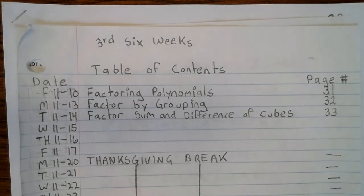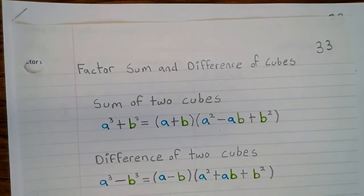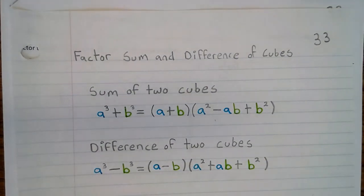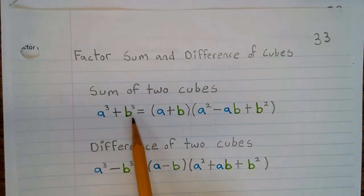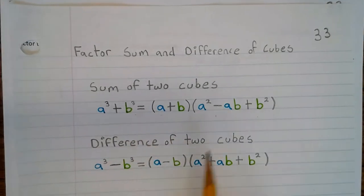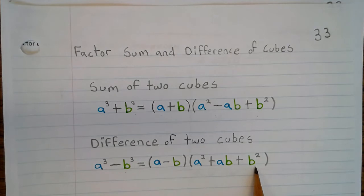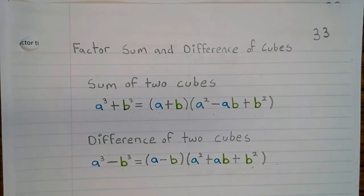All right, now your table of contents are updated. Let's take a look at our notes. Factor, Sum, and Difference of Cubes on page 33. So when you're factoring sum and difference of cubes, you basically look for if you have A cubed plus B cubed, then you use this formula. If you have A cubed minus B cubed, use this formula. So you're going to want to keep these out as you're working the examples. If you would, update your notes.